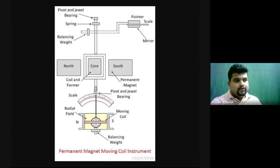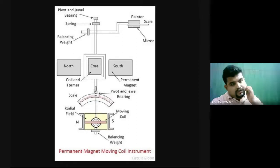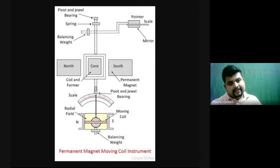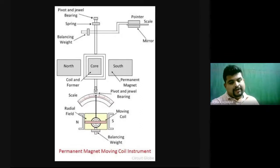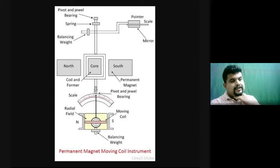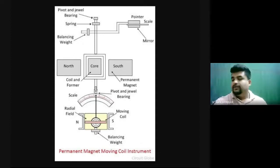After understanding the construction and working of PMMC instrument, the key disadvantage is: because the deflecting torque depends on the polarity of the moving coil, if an alternating quantity is applied, the pointer will continuously oscillate and will not give a reading. Therefore, this instrument works only on direct current (DC) supply.